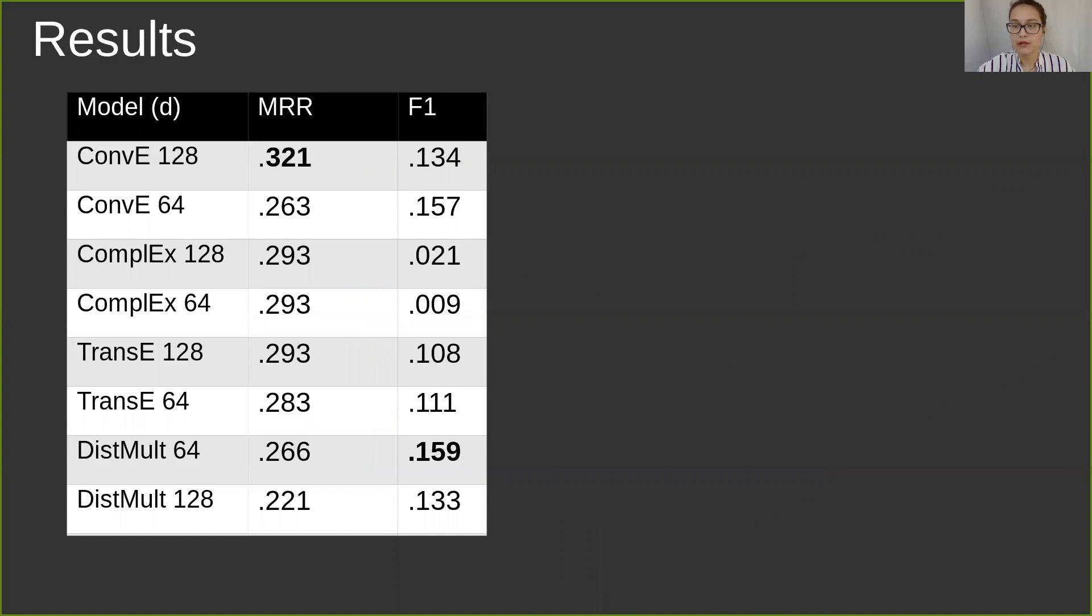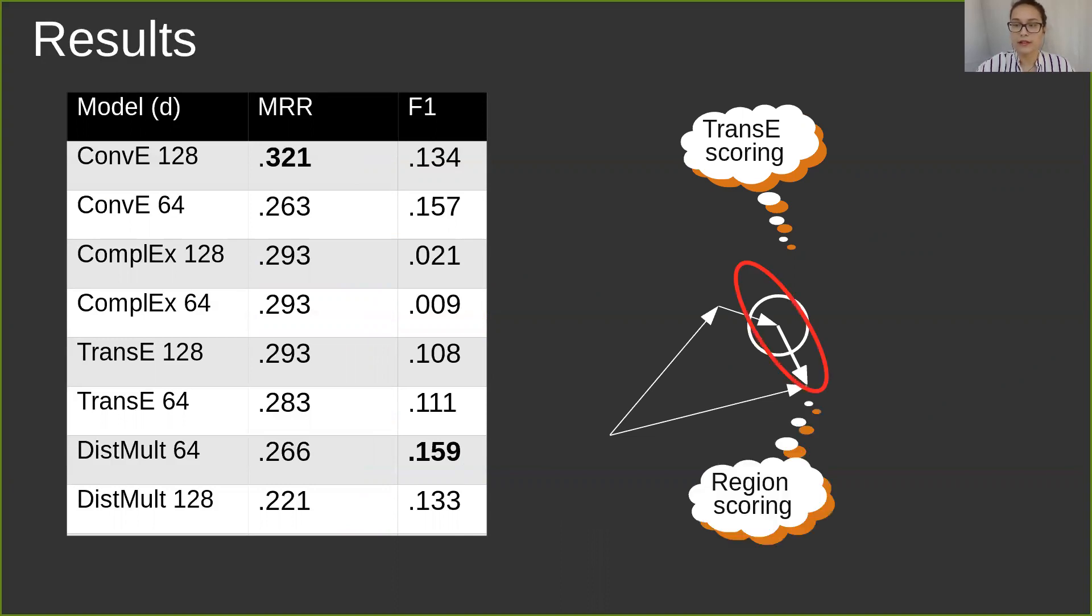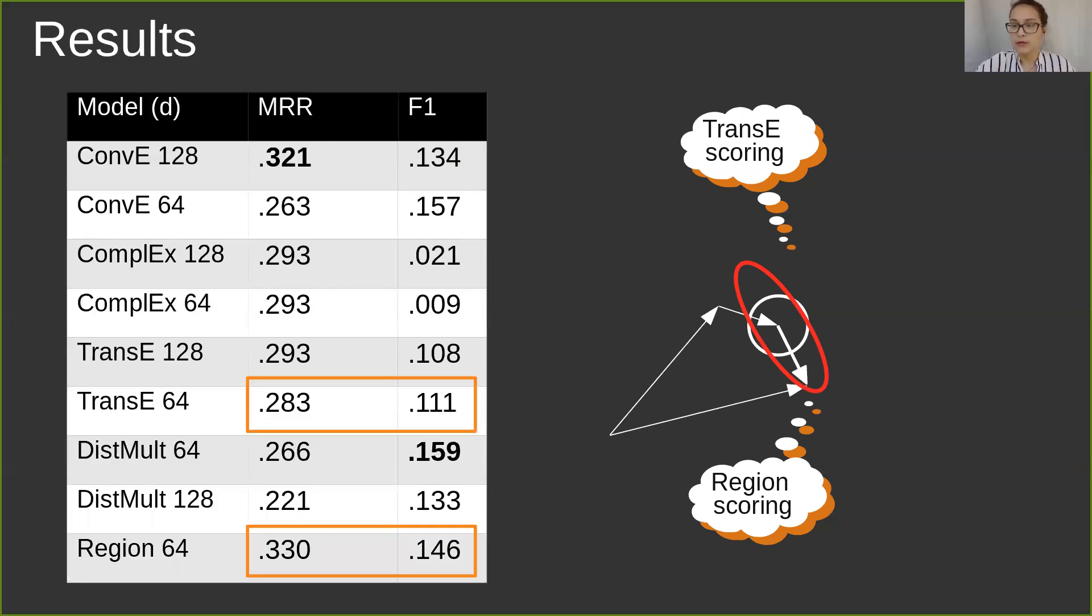To highlight the importance of score calibration, we present a modification of TransE that has an integrated rescaling component to it. The TransE scoring function relies on the length of the distance vector, where a threshold is circle-shaped. Our modification gives the model extra flexibility with an ellipse-shaped threshold. This simple change allows the modified model to outperform the original TransE noticeably.